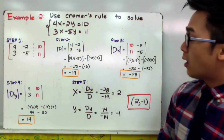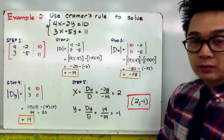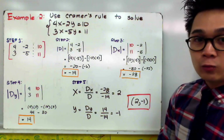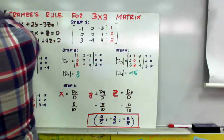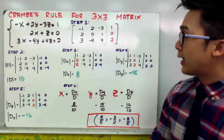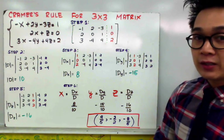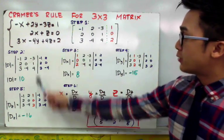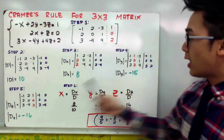That's the method used to find solutions of a linear system with x and y variables. In our last example, I'm going to show how to find the solution of a linear system with x, y, and z variables. The rule is essentially the same; however, finding the determinant of a 3x3 matrix is more tedious. We will find the determinants of the coefficient matrix, Dx, Dy, and Dz.